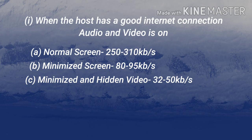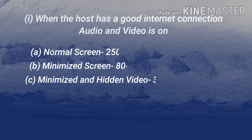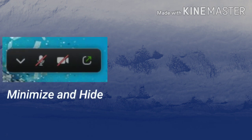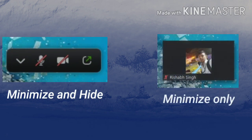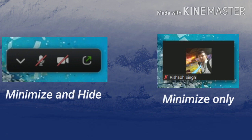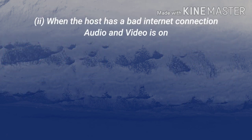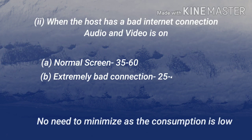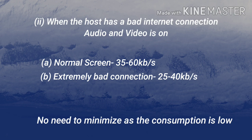It further goes down to 32 to 50 kbps when you choose to hide the host's video. When you minimize and hide the video it will look something like this, and when you just minimize the video it will look something like this. The second case is when the host has a bad internet connection.